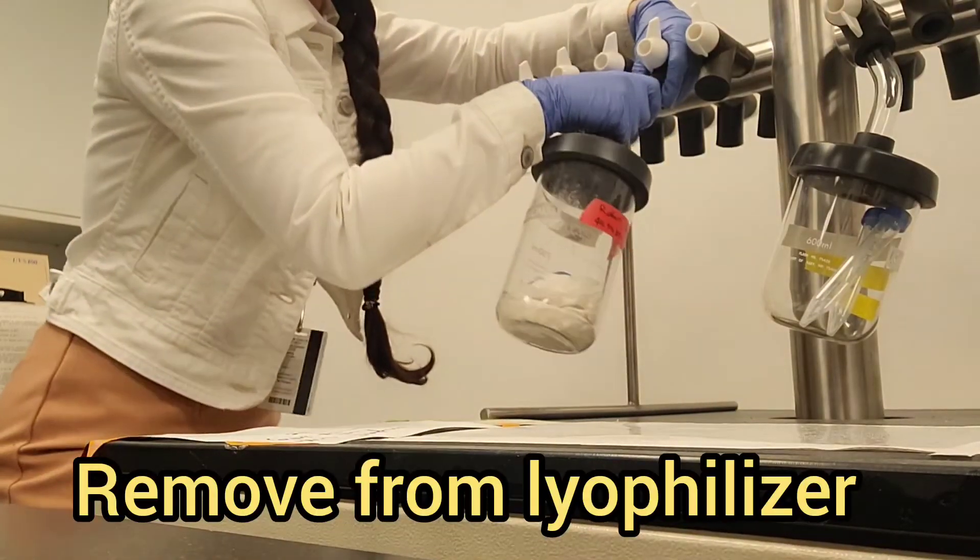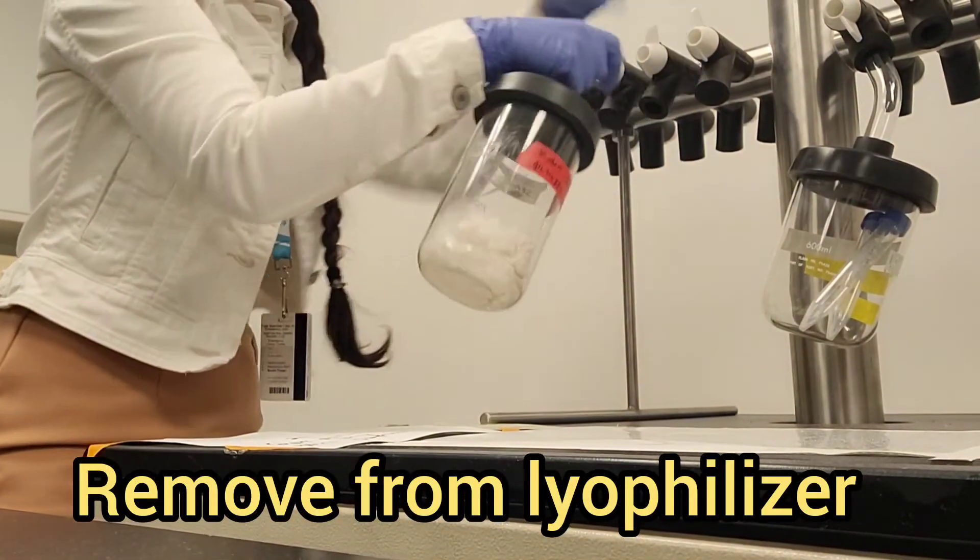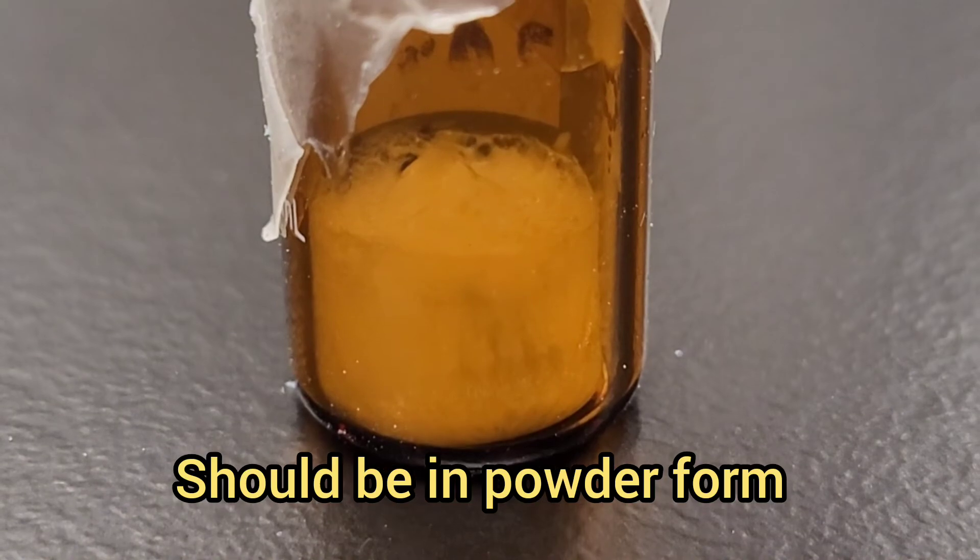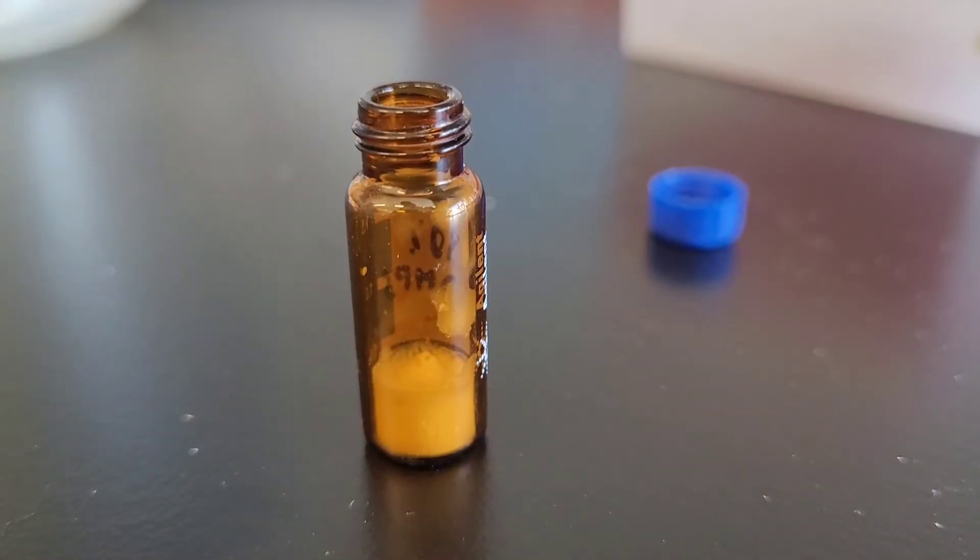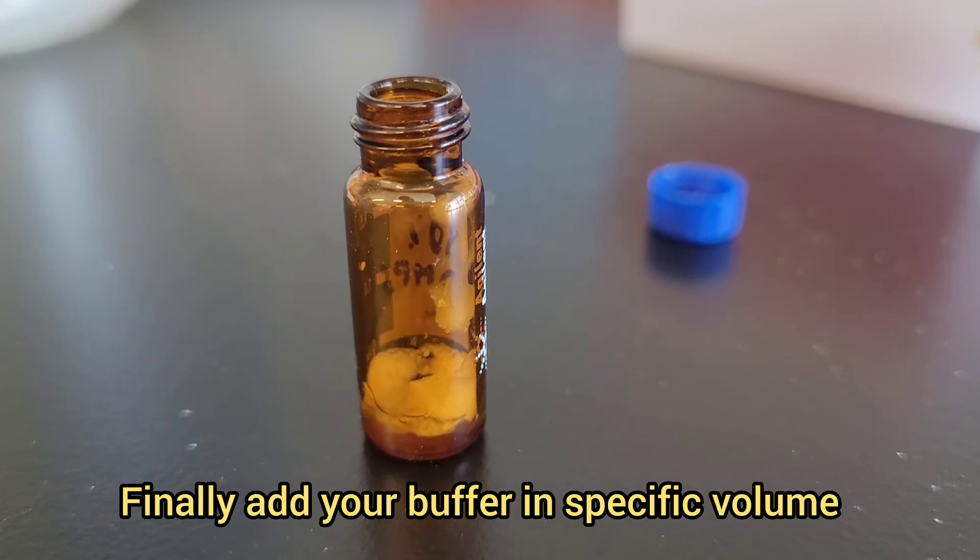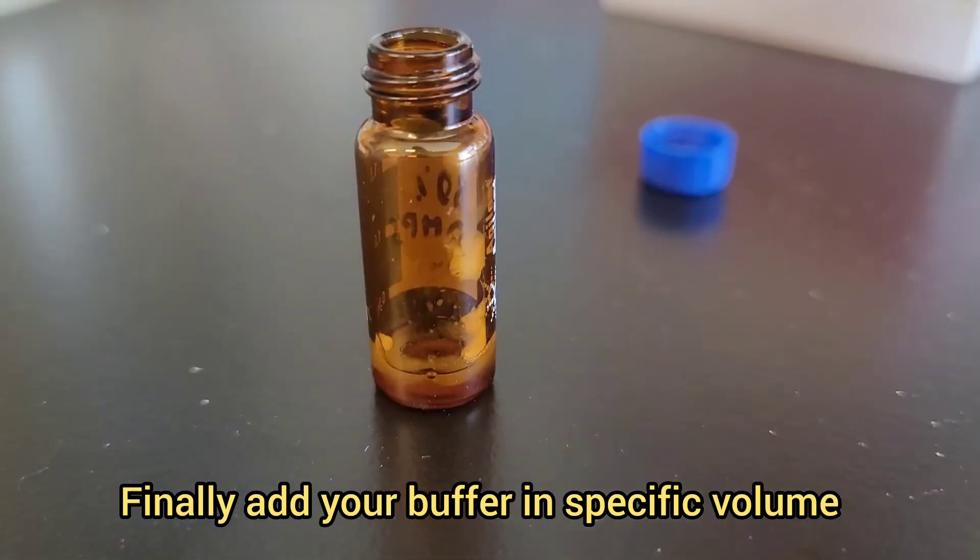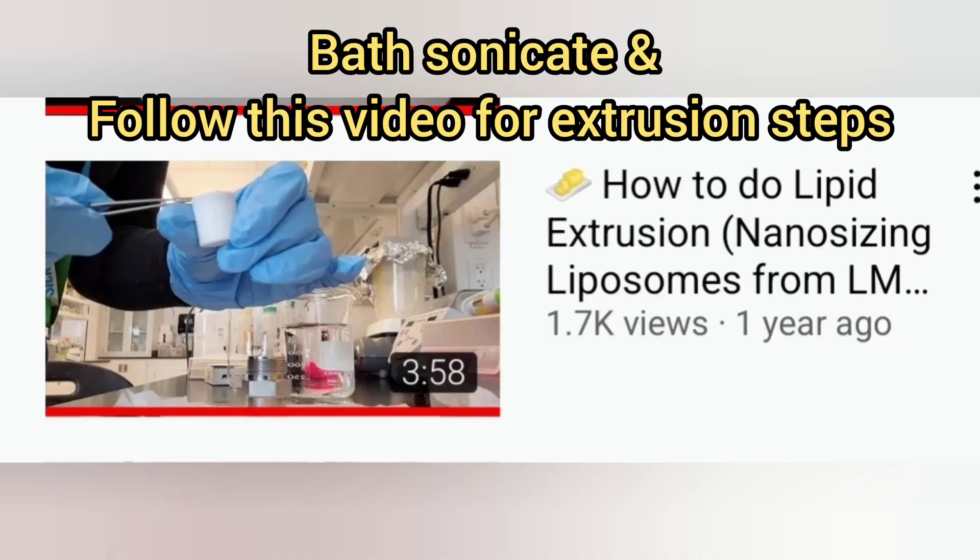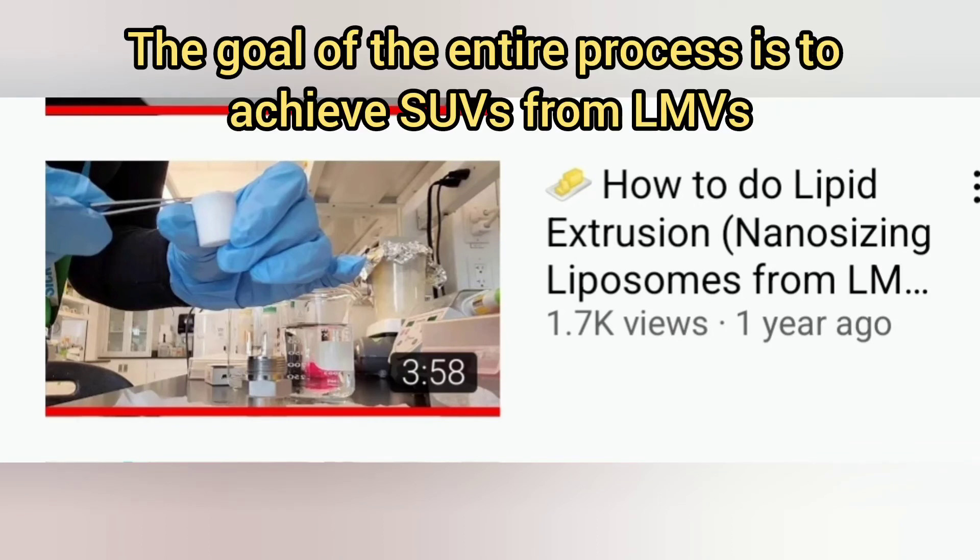The next day you take it off and it should be completely dry powder form. As you can see, it is a white powder. At this point you add your actual buffer. Here I'm adding 20 millimolar tris solution. Once dissolved, you can proceed to sonication and extrusion. For the steps of extrusion of lipids, follow the following video.